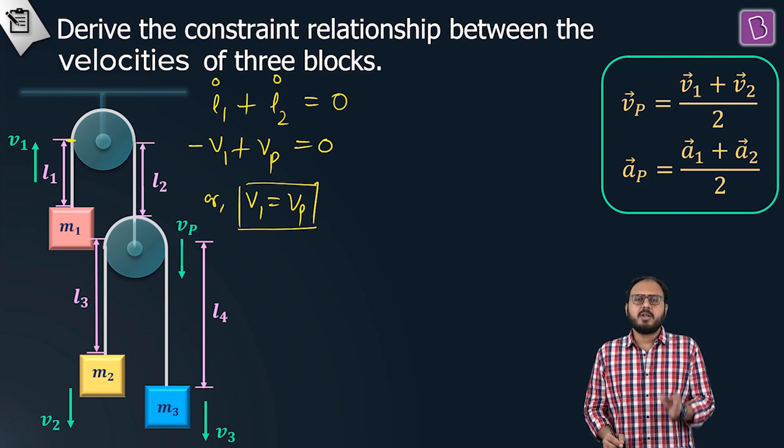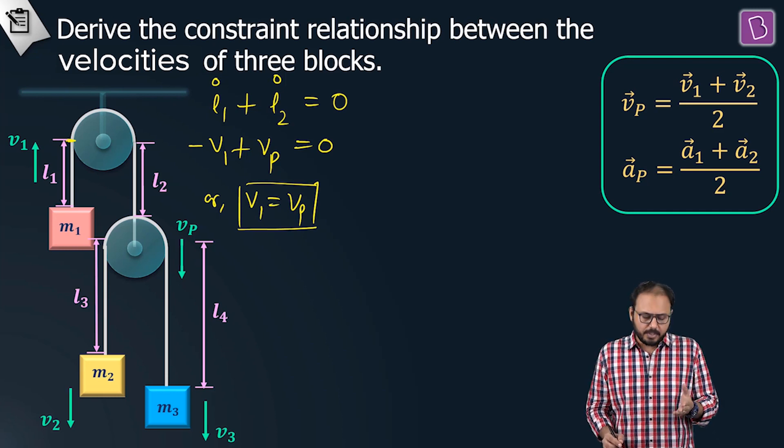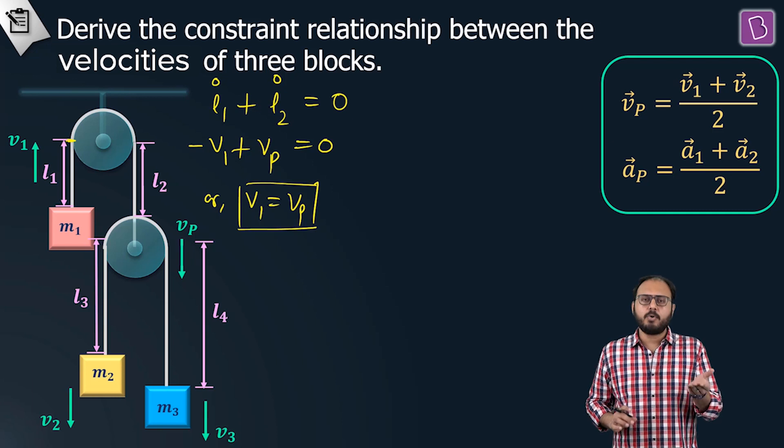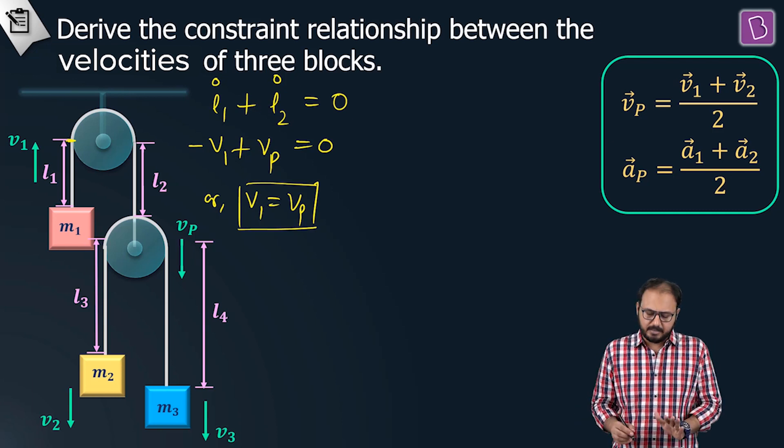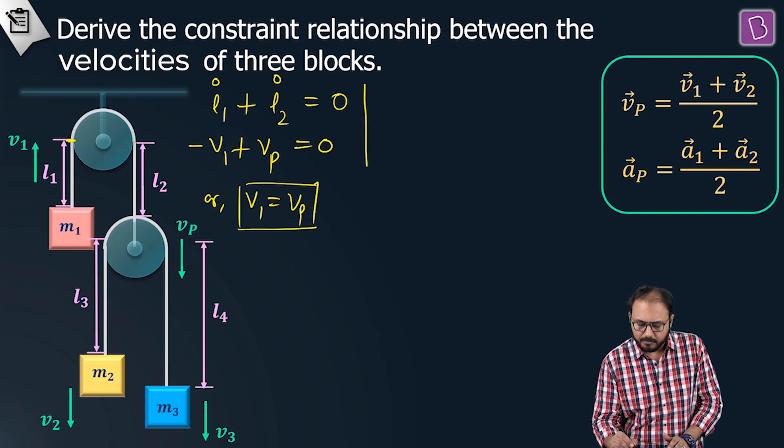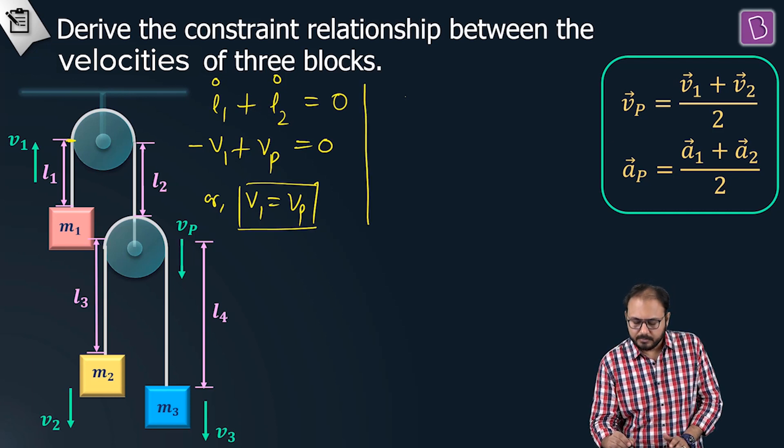Do you realize I could have just said it anyways? Because if block m1 goes up, the movable pulley has to go down. But still, for your reference, I have proved it.